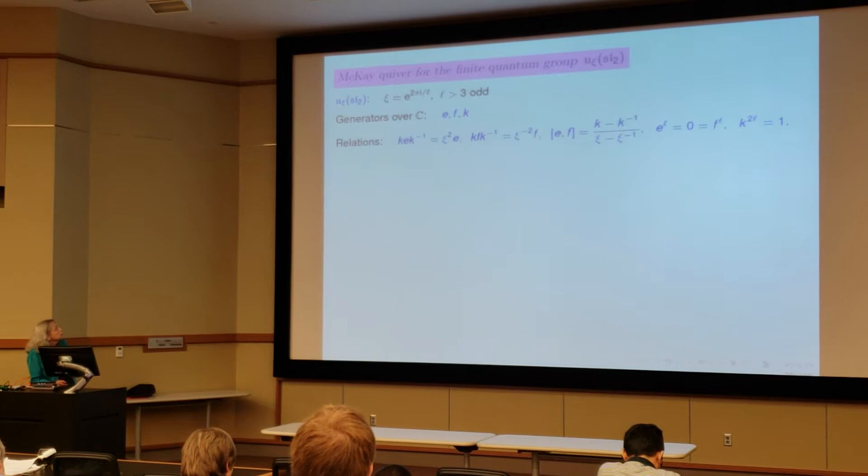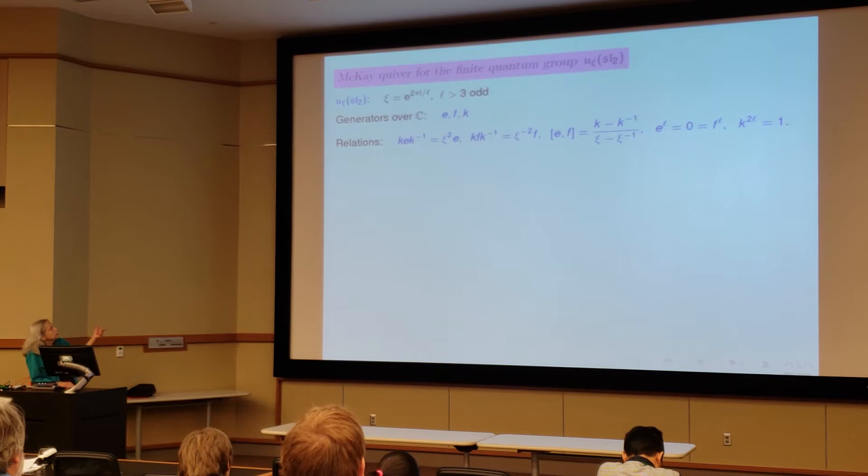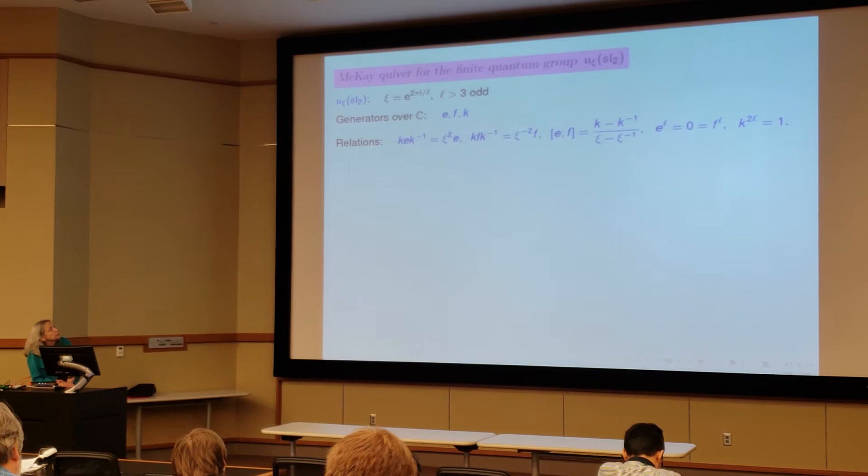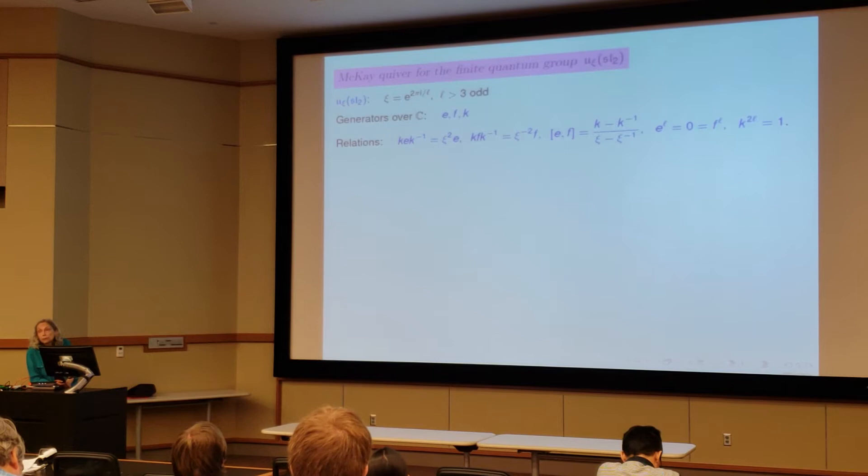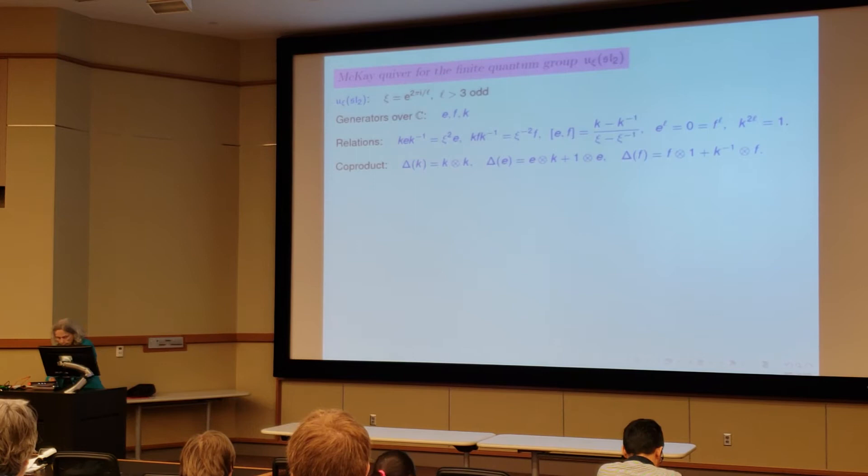So here C is an L-th root of unity where L is odd and greater than three. The generators are E, F, K, relations we're probably familiar with. So conjugating by K multiplies by power of C, and then there's this commutator relation that we have, and then these, the Serre relations, where you can see what we need here is the co-product because we're going to be acting on tensors, and this is the way we need to act on tensors.